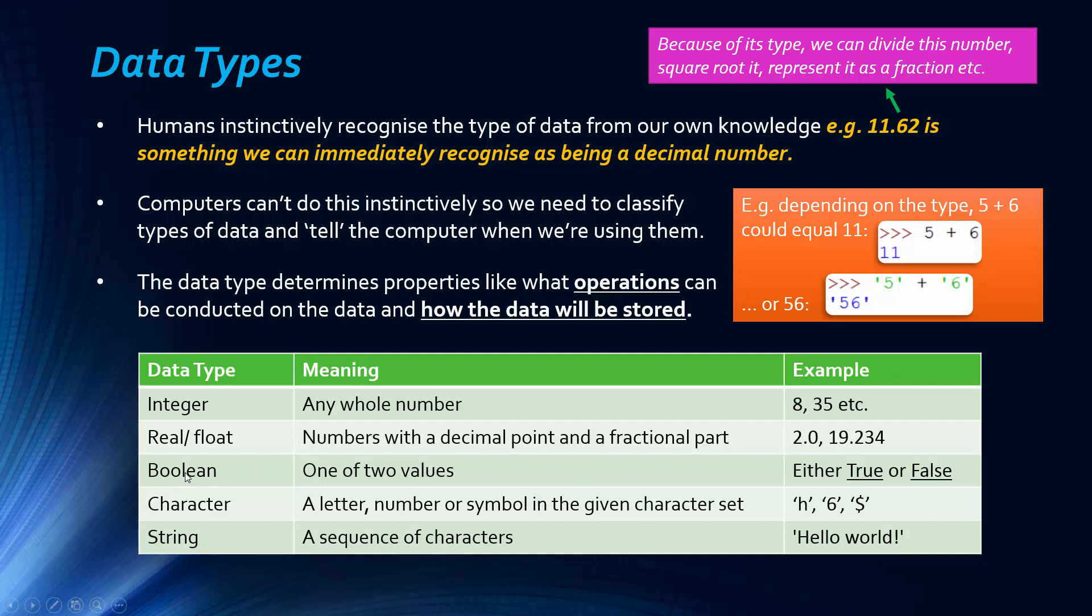The third one is boolean. The boolean data type is one of two values - either true or false, or one or zero. We'll look at this binary boolean case in future videos. A character is a letter, number, or symbol in a given character set like ASCII or Unicode, which we're going to cover later. A character can be used to form a string, and a string is a sequence of characters.